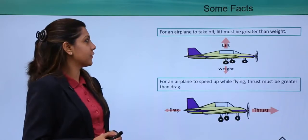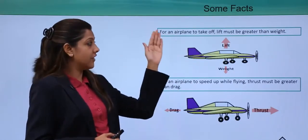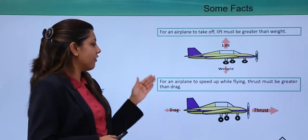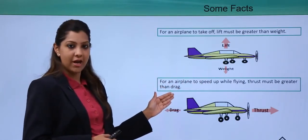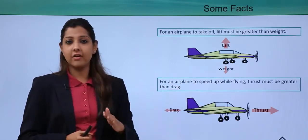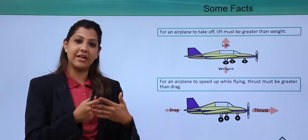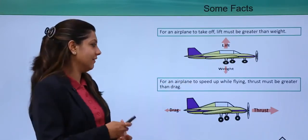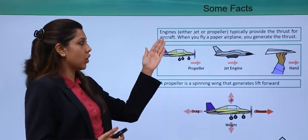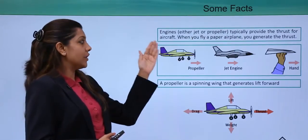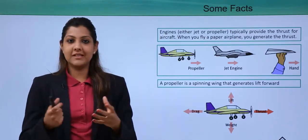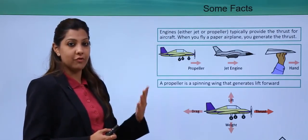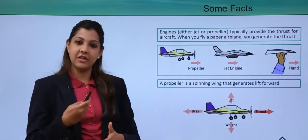Key facts: for an airplane to take off, lift must be greater than weight. For an airplane to speed up while flying, thrust must be greater than drag — otherwise the aircraft cannot move forward. Engines, either jet or propeller, typically provide the thrust. When you fly a paper airplane, you generate the thrust yourself. A propeller is a spinning device that generates lift in a forward direction.